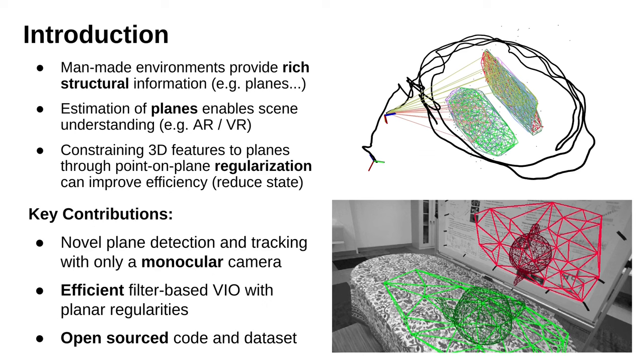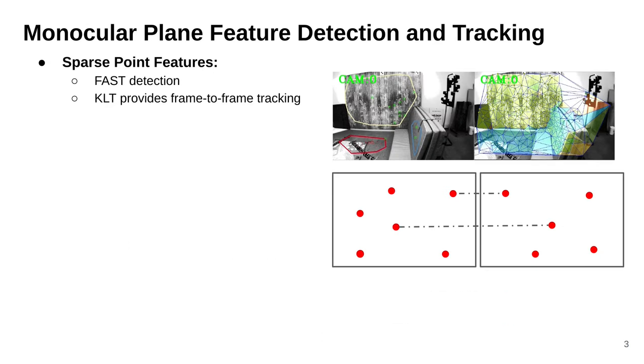In this work, we propose a novel and efficient plane detection and tracking algorithm without the need for any depth sensor or deep network. We have demonstrated that our filter-based VIO system with planar regularities is not only efficient but also improves state-of-the-art point-based VIO. As shown in the figures on the right, we have successfully recovered plane features and rendered a teapot on the plane as an AR demonstration. Additionally, we have open sourced our code and new dataset to the public.